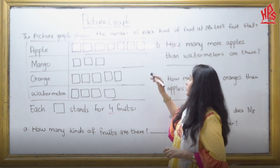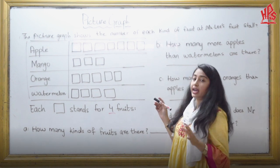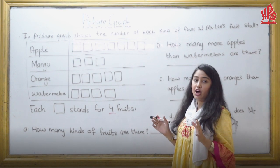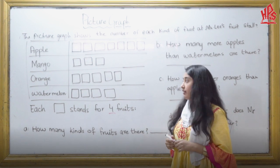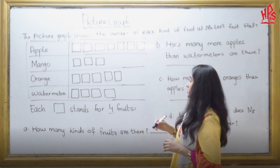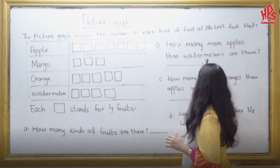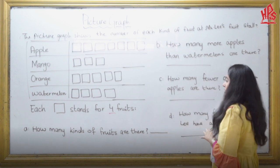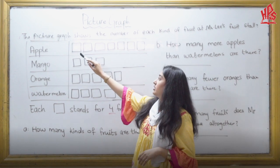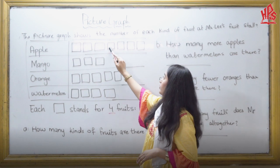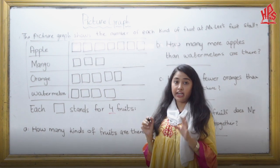So first we will do this part. Here we don't know the actual number — how many apples, mangoes, oranges, or watermelons he has. So first we will count: 1, 2, 3, 4, 5, 6, 7, 8. We have 8 boxes.